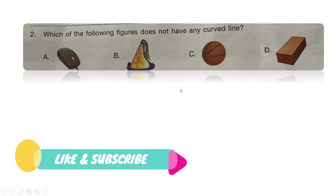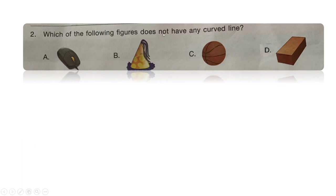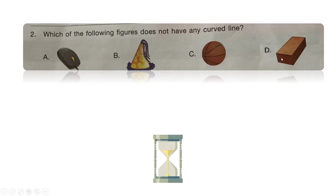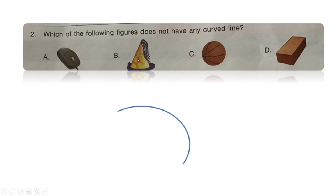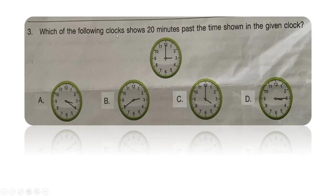Next question: which of the following figures does not have any curved line? Is it option A: the mouse, option B: the conical hat, option C: the wall, or option D: the brick? A curved line is something rounded, and of the given figures, the only figure without any curved line — made only of straight lines — is option D, the brick.